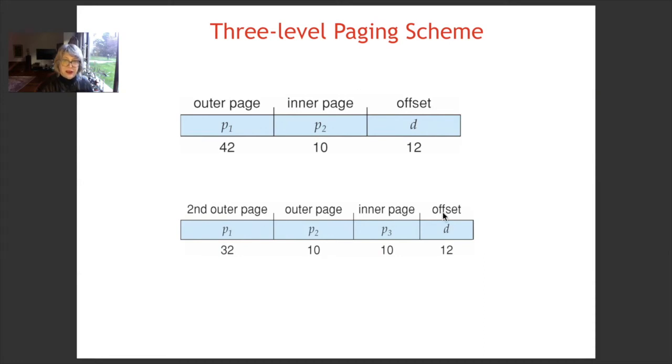Here, we have offset, inner page, outer page, and second outer page. So, the access will need an access to the second outer page, and then access to the outer page, then inner page.